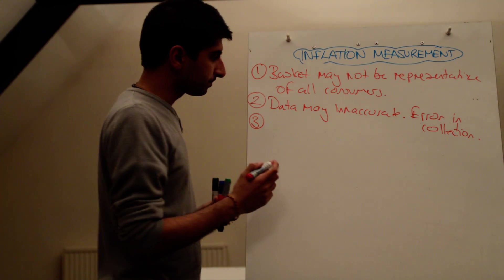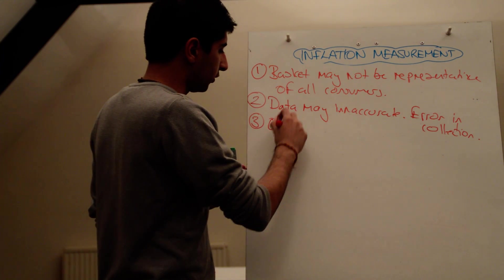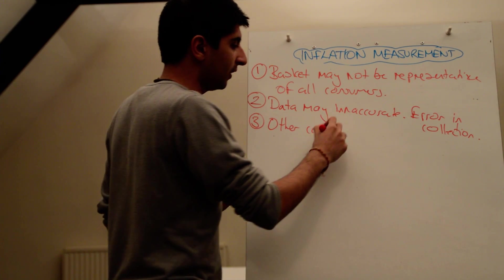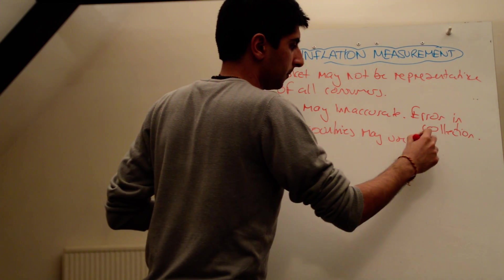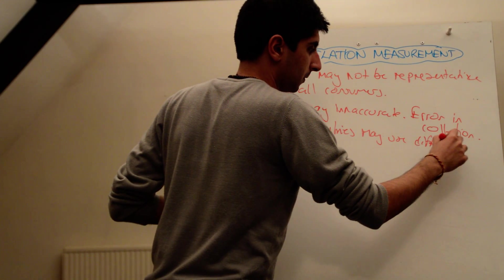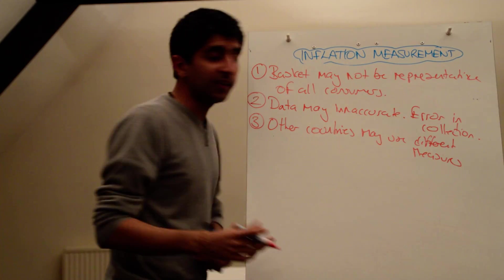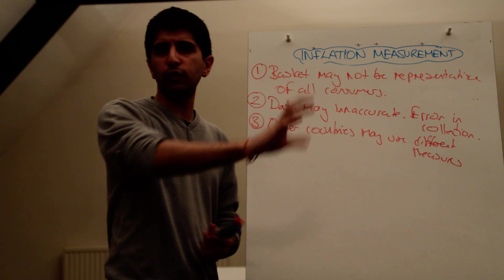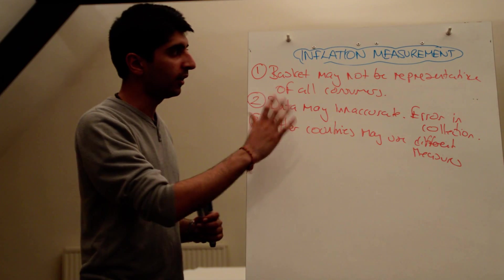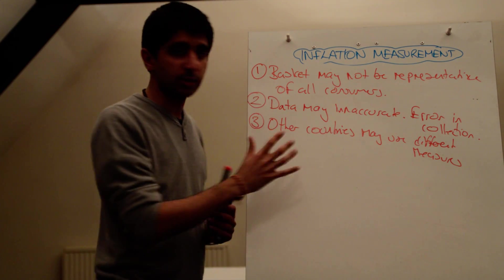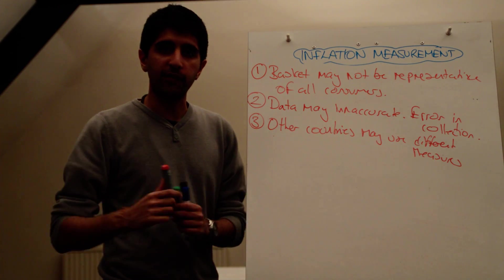At the same time, other countries may use different measures, which then confuses things. So if in the UK we use the CPI, but other countries use the RPI or even a different measure, things can get very confusing. As a measure of inflation in CPI, if other people are using different measures, it makes comparison very difficult.